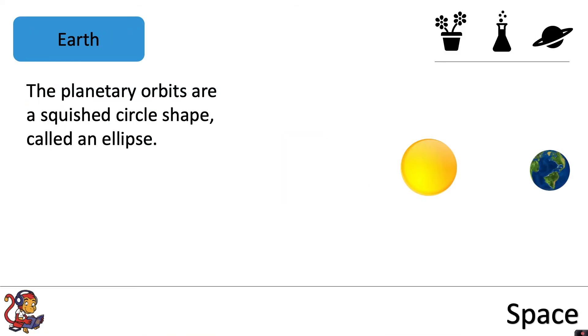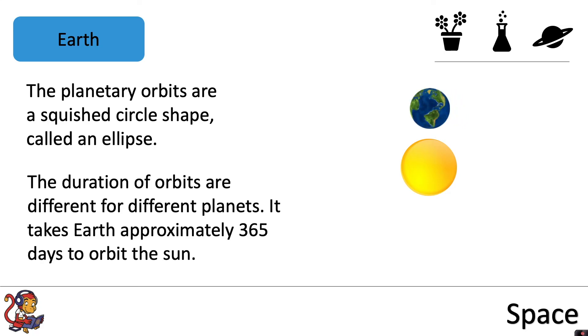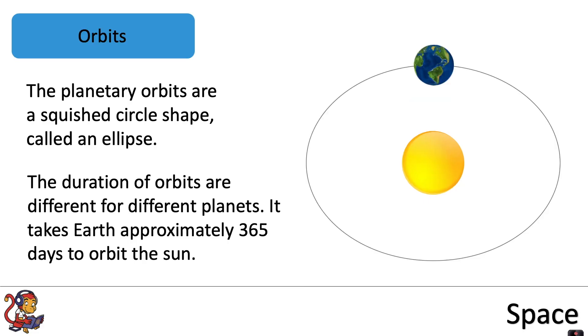The planetary orbits are a squished circle shape called an ellipse. The duration of orbits are different for different planets. It takes Earth approximately 365 days to orbit the Sun, but people didn't always believe that the Sun was at the centre of the solar system.